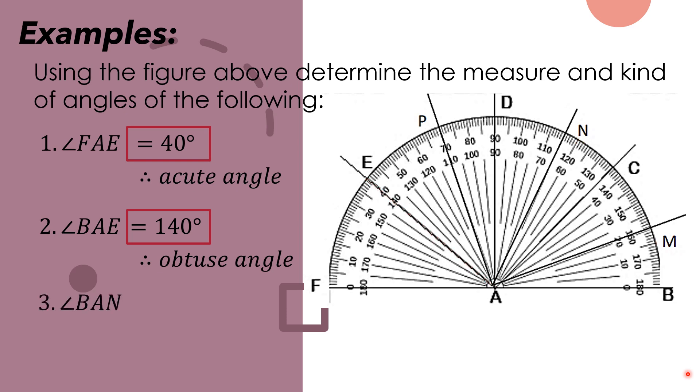Let's erase the lines. Third example, angle BAN. AB. We use the inner scale again since this is the zero. And then, AN. Our line or ray lies between 60 and 70. Therefore, angle BAN is 65 degrees. And since 65 is less than 90, it is also an example of acute angle.